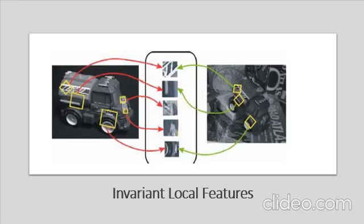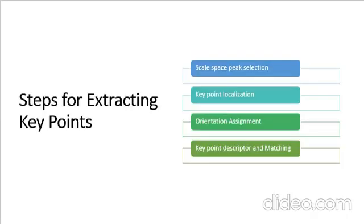Here are some invariant local features of the SIFT steps for extracting key points. There are mainly four steps involved in the SIFT algorithm. First one is scale-space peak selection, which means potential locations for finding features.